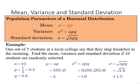These are the formulas for calculating population parameters for a binomial distribution. The mean is simply n times p, the number of trials times probability of success.